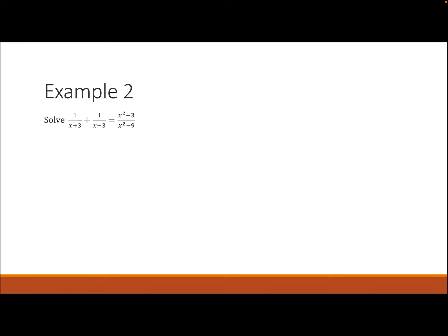For example two, the first thing we do is factor all of the denominators. The equation becomes 1/(x+3) + 1/(x−3) = (x²−3)/((x+3)(x−3)). We can see that if we get x = −3 or x = 3, neither of those solutions will work.